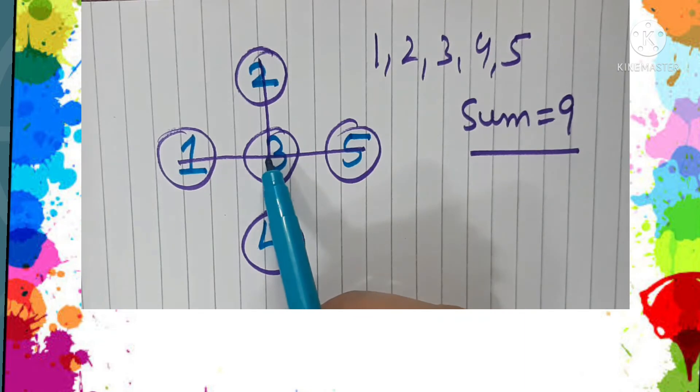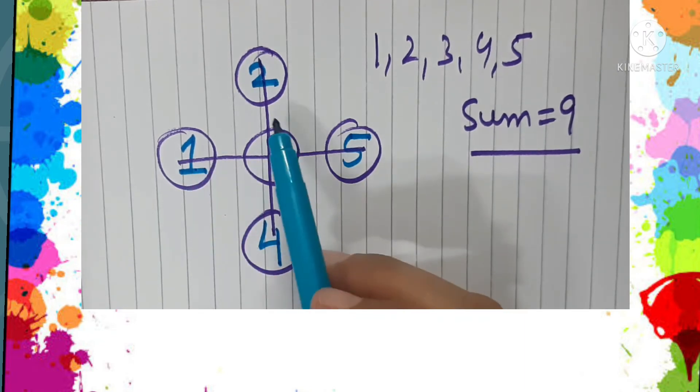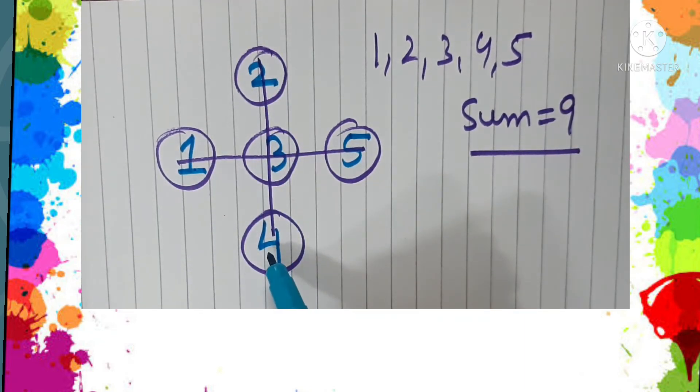You see that 5 plus 3 plus 1 is 9. 2 plus 3 plus 4 is 9. If you get some other solution, please share.